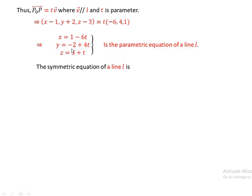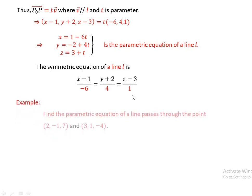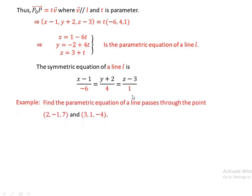From y equals -2 plus 4t, we get (y plus 2) over 4 equals t. From z equals 3 plus t, we get (z minus 3) over 1 equals t. Therefore, the symmetric form of the equation of line L is: (x minus 1) over (-6) equals (y plus 2) over 4 equals (z minus 3) over 1.